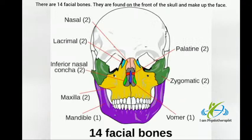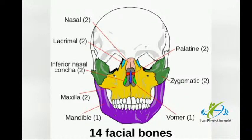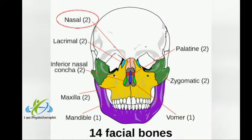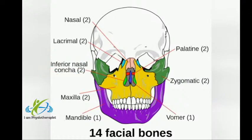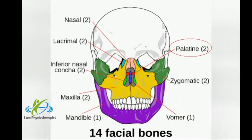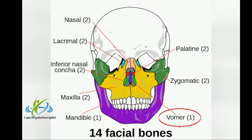There are 14 facial bones, found on the front of the skull making up the face. Facial bones include: two Nasal bones, two Lacrimal bones, two Inferior nasal conchae, two Maxilla, one Mandible, two Palatine bones, two Zygomatic bones, and one Vomer bone.